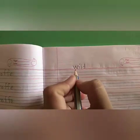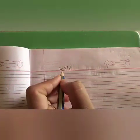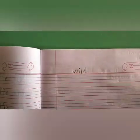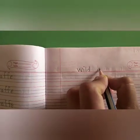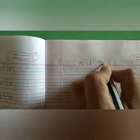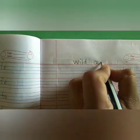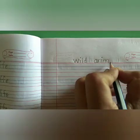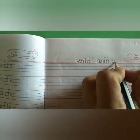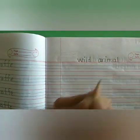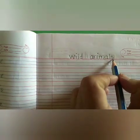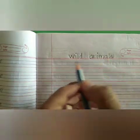W-I-L-D. Now we will give one finger space from the 'wild' spelling, then we will write small a, small n, small i, small m, small a, small l, small s — A-N-I-M-A-L-S. Animals. Wild Animals.